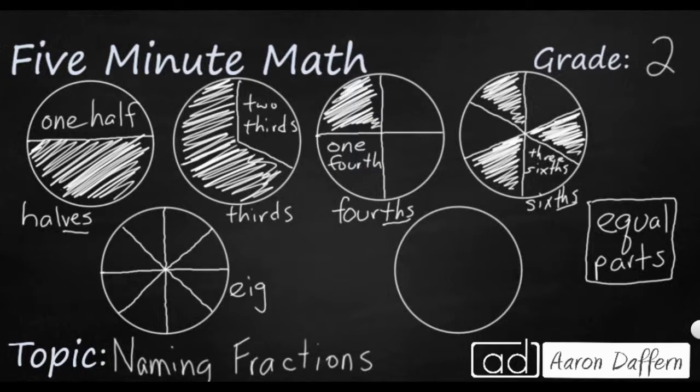Eighths. So what we're going to do is write the word eight, and then we're just going to add HS. You don't need to add THS because you've already got a T at the end of eight. Once again, we can shade in one part there, and I can say that is one-eighth.